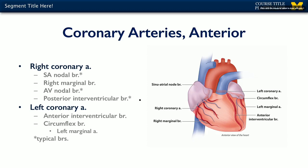The LCA also arises from the ascending aorta. It travels between the pulmonary trunk and the left auricle of the atrium and gives rise to two branches: the anterior interventricular branch, also known as the left anterior descending or LAD, which rides down the anterior interventricular sulcus to supply the anterior portion of the interventricular septum; and the circumflex branch, riding in the coronary sulcus and wrapping around to the posterior aspect of the heart, giving off the left marginal artery.